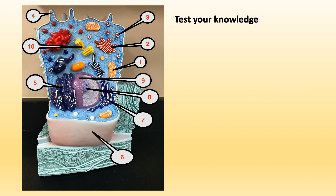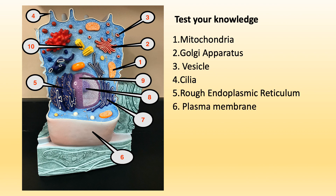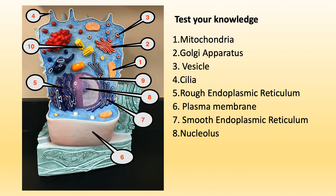Can you test your knowledge on this anatomical model labeled with numbers? Number one: mitochondria. Number two: Golgi apparatus. Number three: vesicle. Number four: cilia. Number five: rough endoplasmic reticulum. Number six: plasma membrane. Number seven: smooth endoplasmic reticulum. Number eight: nucleolus. Number nine: nucleus. Number ten: centrosome.